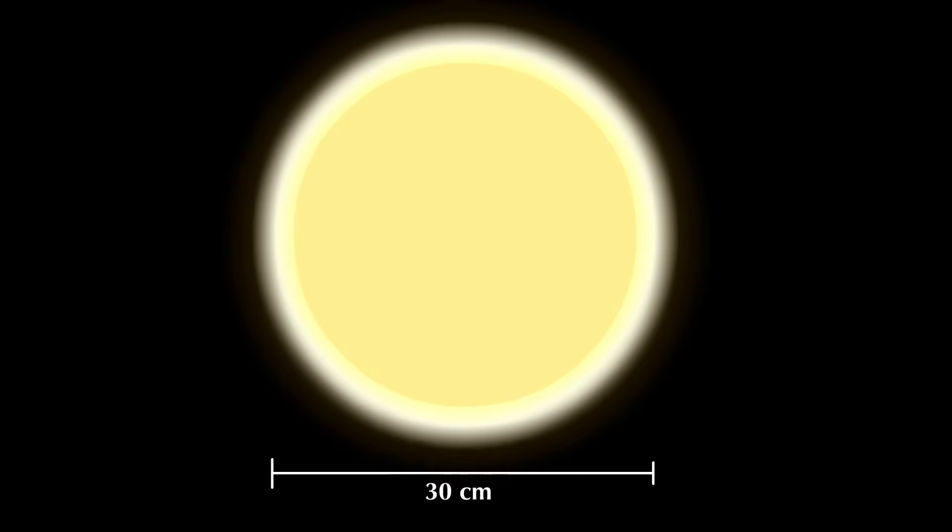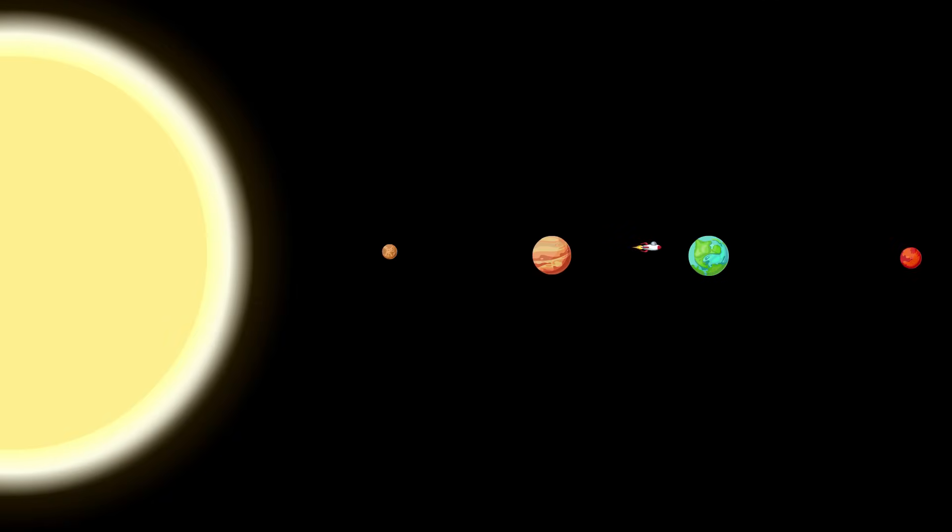If the sun's diameter was reduced in scale to 30 centimeters, the average length of a ruler, Mercury would only be 1 millimeter in width, Venus would be 2.6 millimeters, Earth would be 2.7 millimeters, and Mars would only be 1.4 millimeters wide.